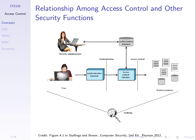Once we've authenticated them — for example, they've logged in with their username and password — we may then want to further control what they can do on the system. Our computer system has a set of resources: files, CPU, memory, and we want to control which users can use those resources. That's the role of access control.